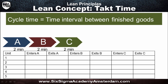Starting at time zero, the first unit of raw material enters sub-process A at time zero. It takes two minutes to be processed, so it exits at time two. It immediately goes on to sub-process B, stays for two minutes, and exits at time four. It immediately continues to sub-process C, stays for two minutes, and exits at time six. That's the first unit processed.